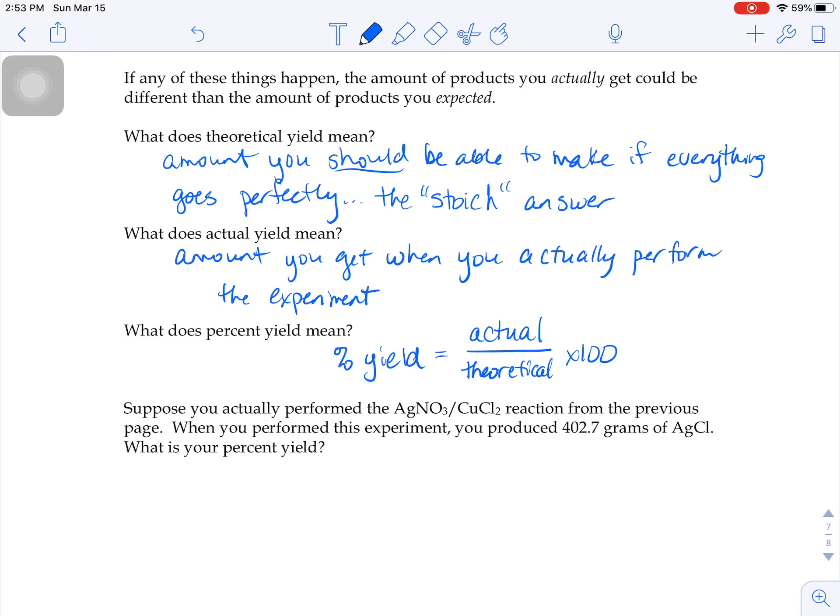So it gives you a scenario that says, suppose you actually performed that silver nitrate copper two chloride reaction from the previous page. You went into a lab and you mixed the chemicals as it says.